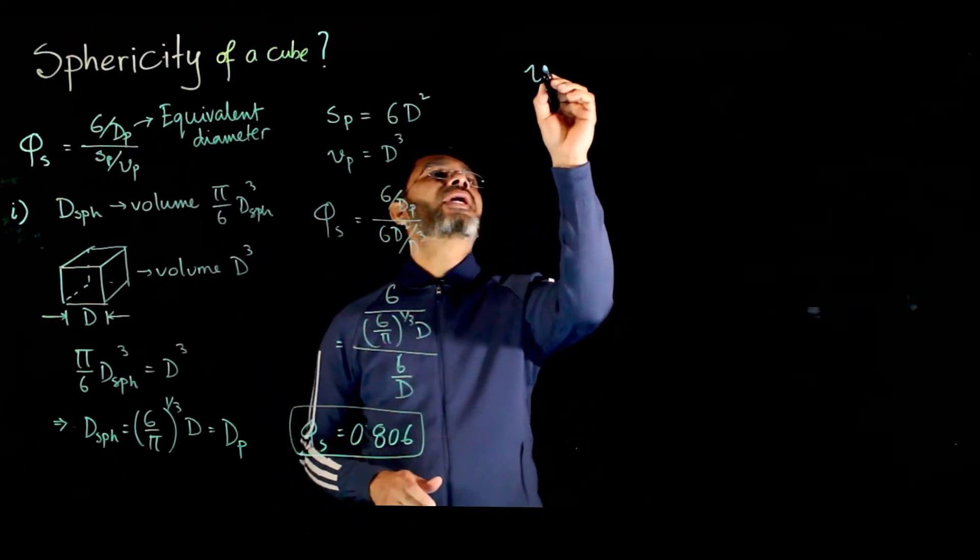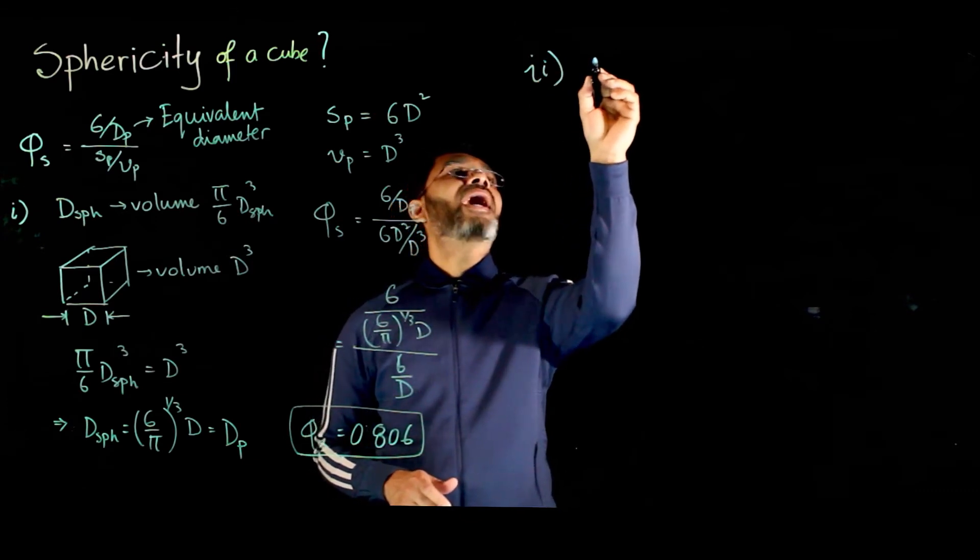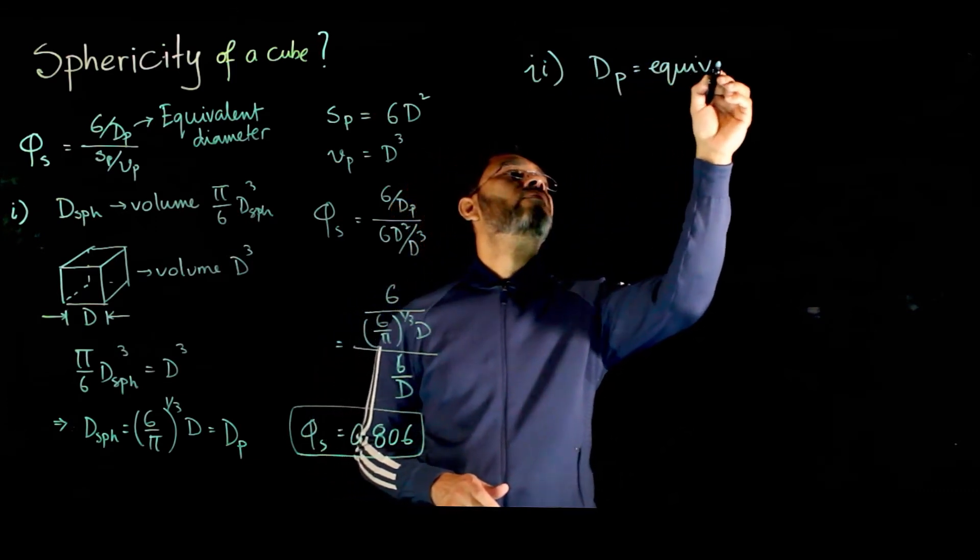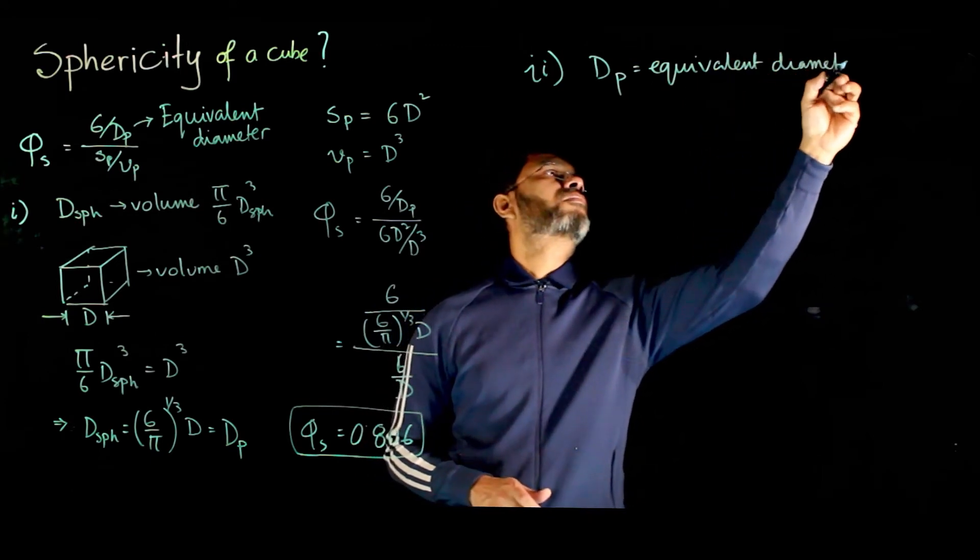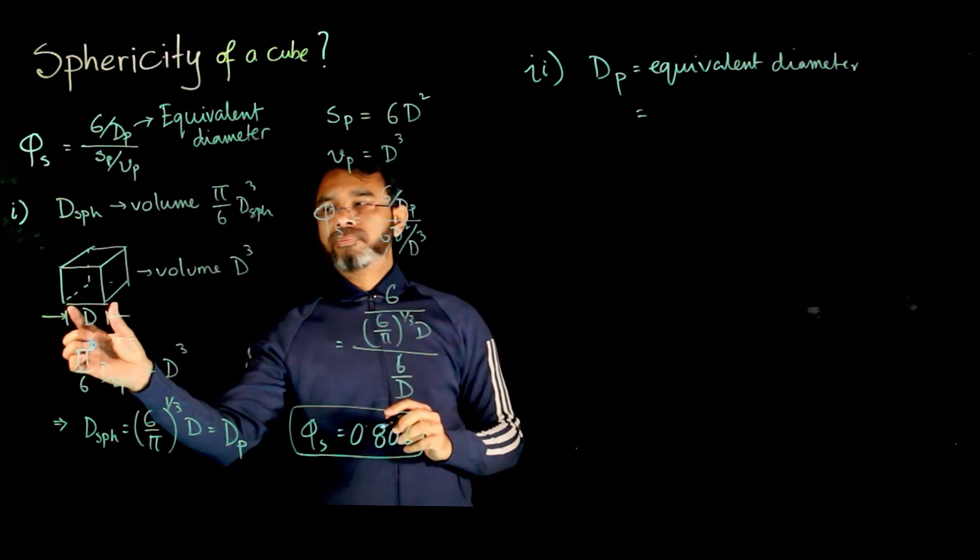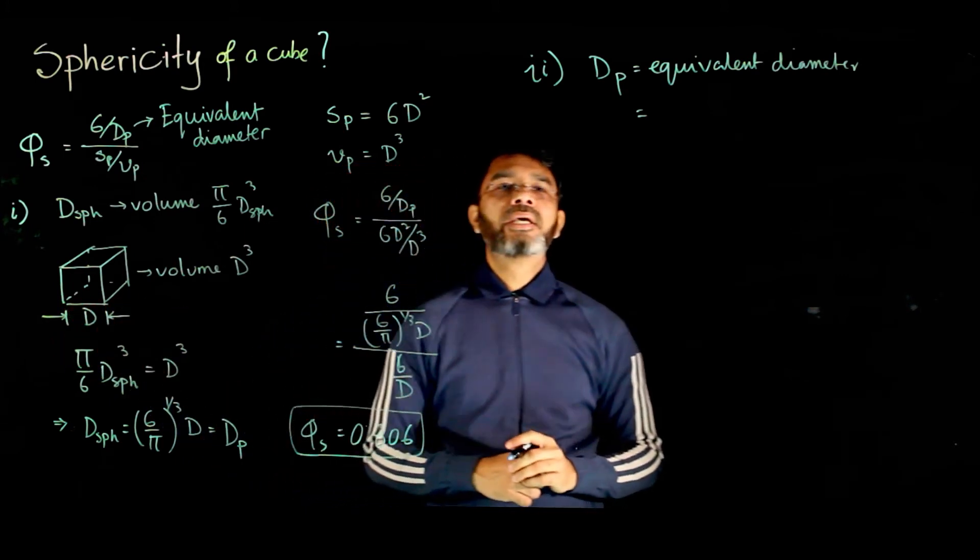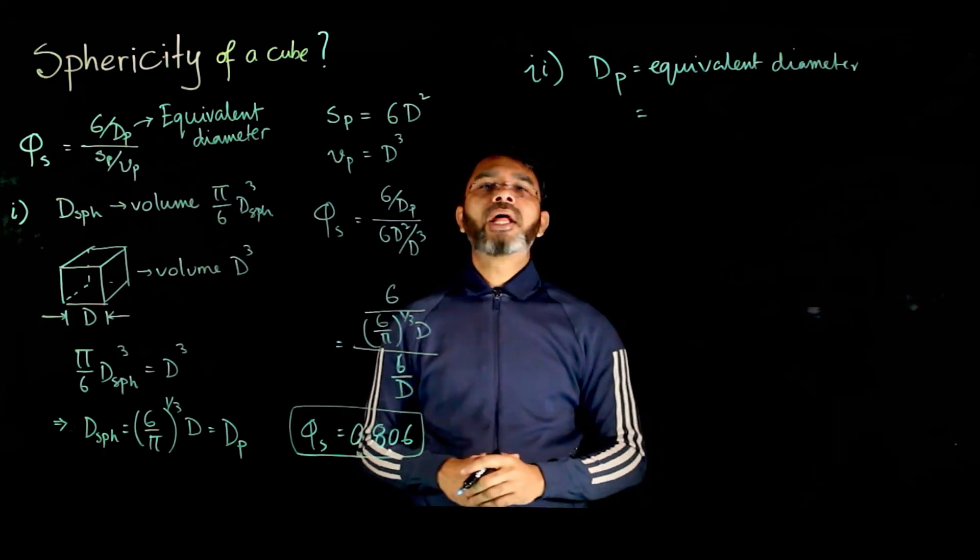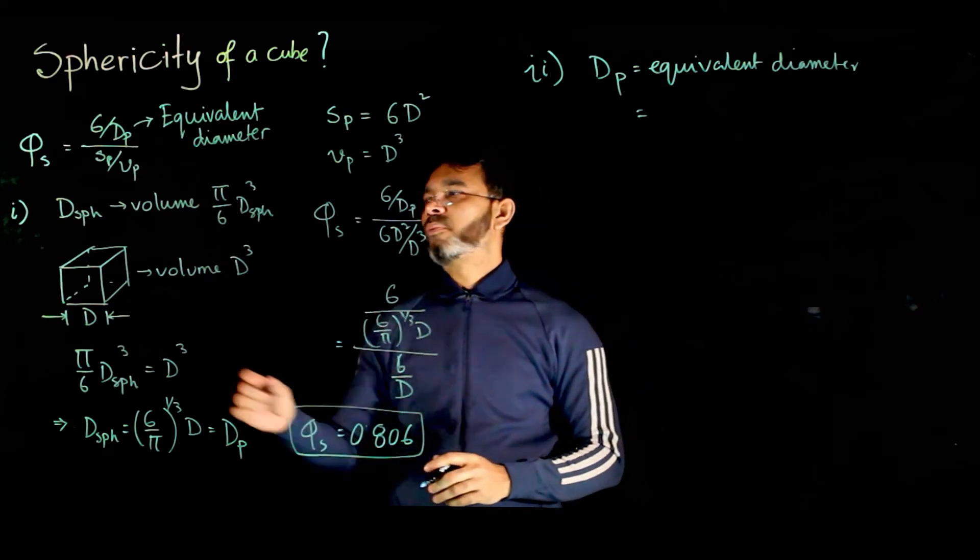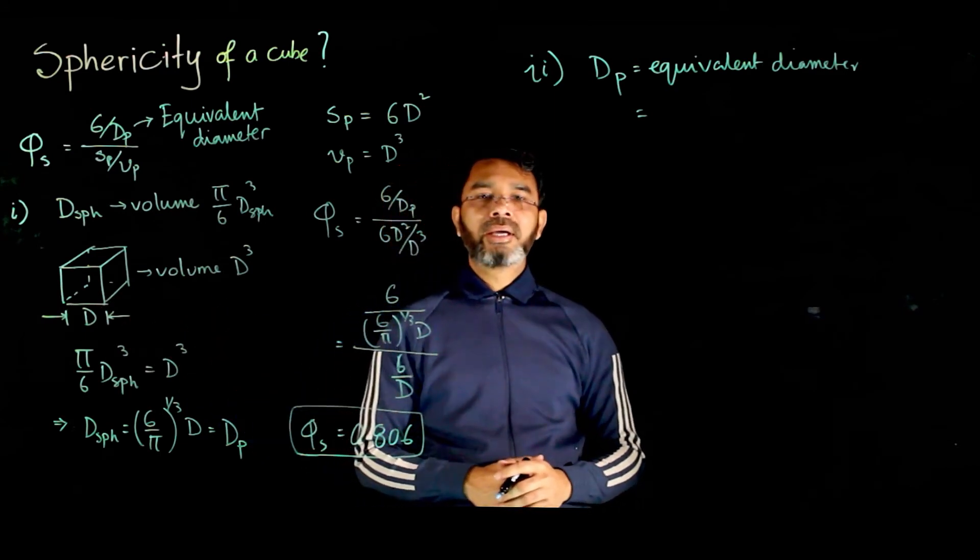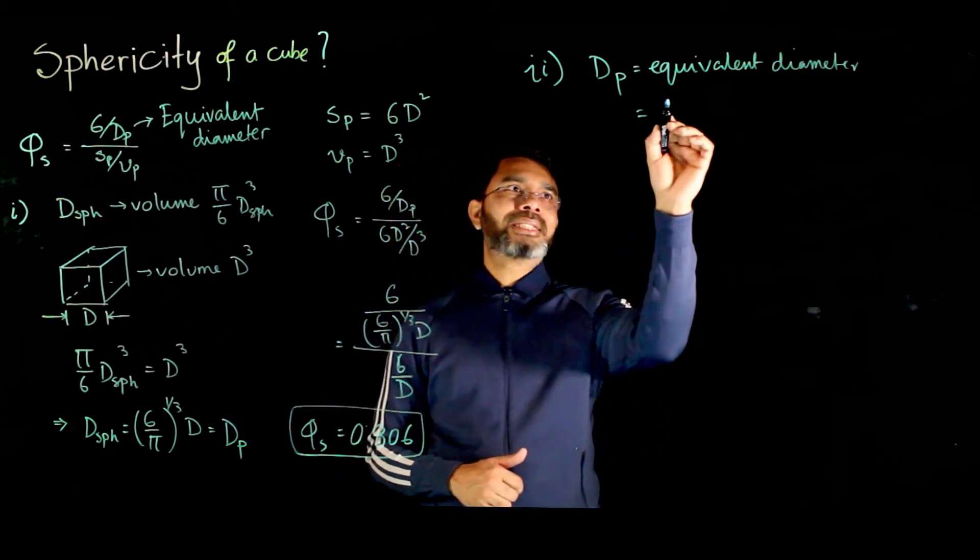The second way is if we define the equivalent diameter as the length of one side of the cube. For particles, typically with regular size, the equivalent diameter can be defined in other ways. Say for the cube, it can be defined as the length of one side of the particle, which is d.